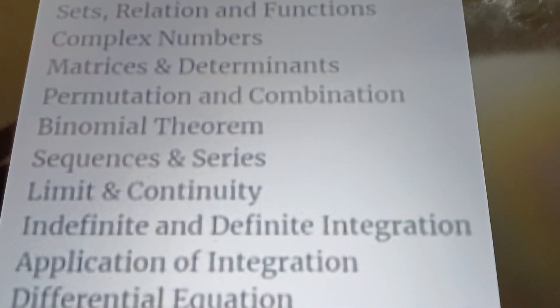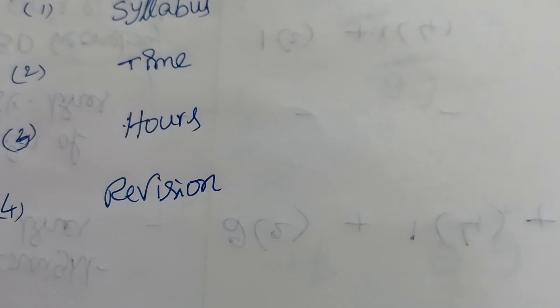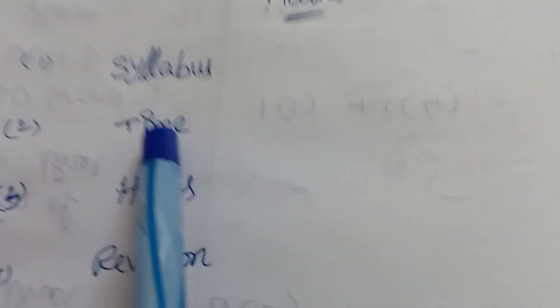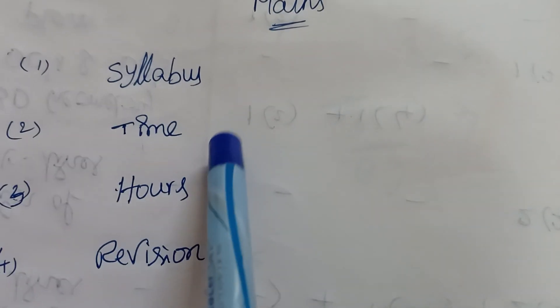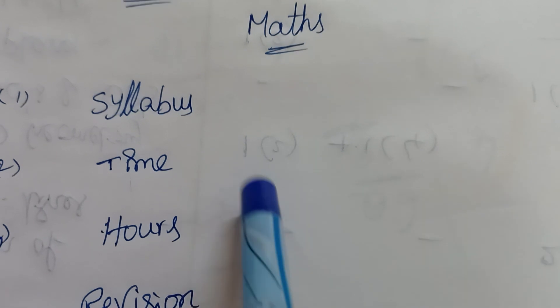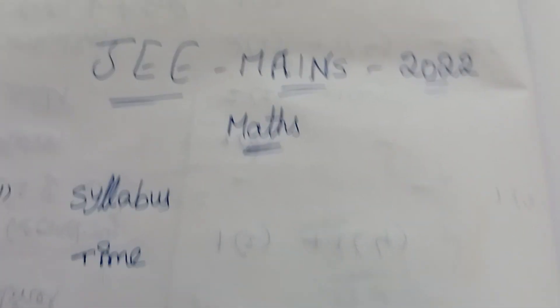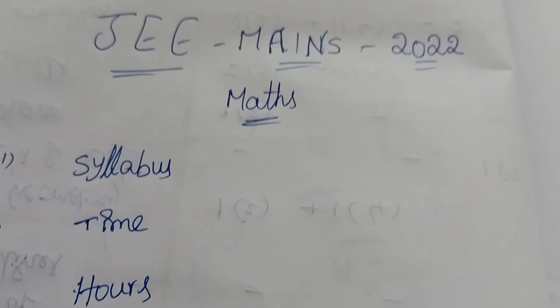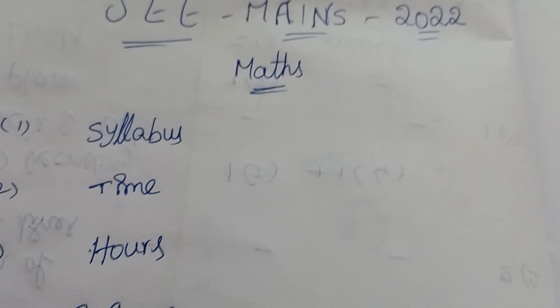Next, what timings are important to prepare these topics? Time is compulsory. Morning time—5 to 6 AM or 4 to 6 AM—is very important to prepare for Mains, particularly Math, Physics, or Chemistry. In two hours, prepare like one hour for Math, then the next hour divided between Physics and Chemistry.